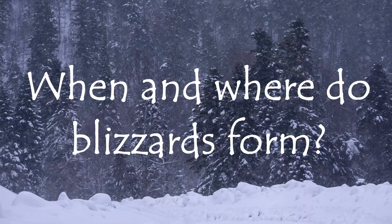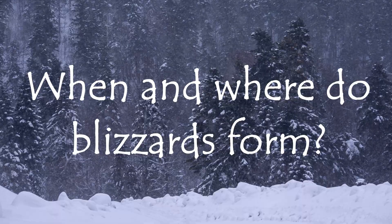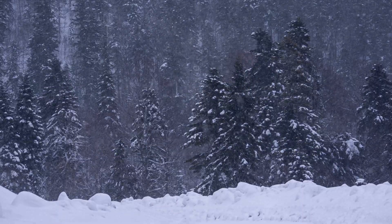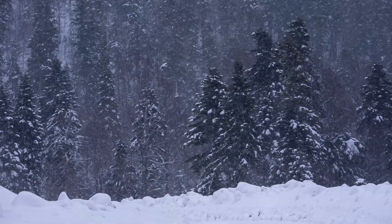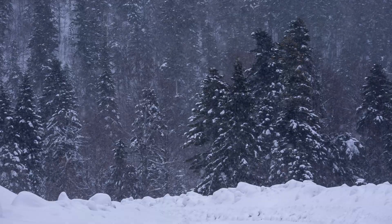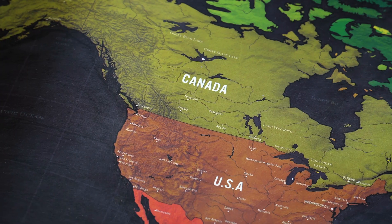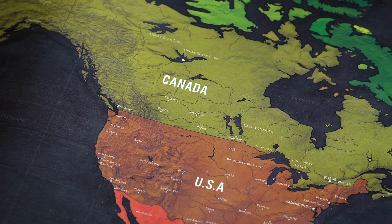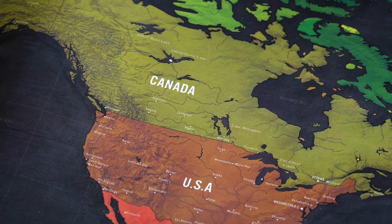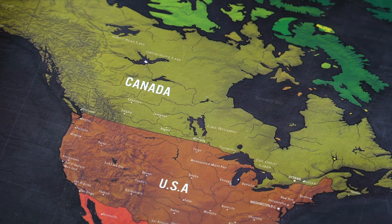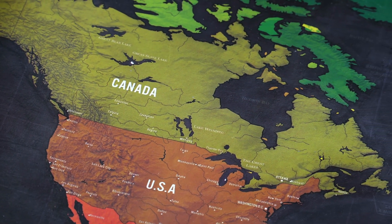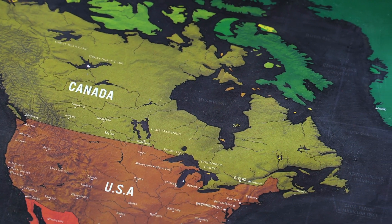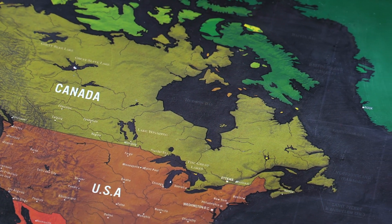When and where do blizzards form? Blizzards are winter storms, and they can happen anywhere that it snows. However, they seem to happen more prevalently in the northeastern region of the United States and in the provinces of Canada.